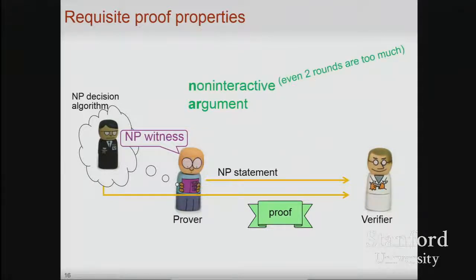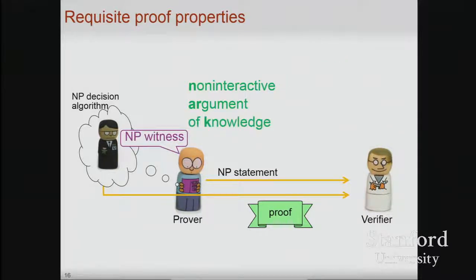The next property we want is for the proof to be non-interactive. In the context of a cryptocurrency, these proofs will end up on the public ledger, on the blockchain, and other people are going to check them. A poor consumer can't interact with everyone into the future, so it must be something you can write down non-interactively. Next, it must be a proof of knowledge — not just that there exists a witness for the NP statement, but that the consumer actually knows it. It's not just that there could have been transactions leading to this payment, but the consumer actually knows those transactions and the corresponding secret keys embedded as proof of ownership.